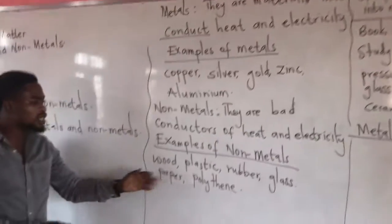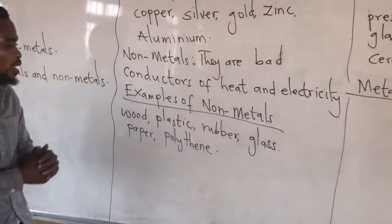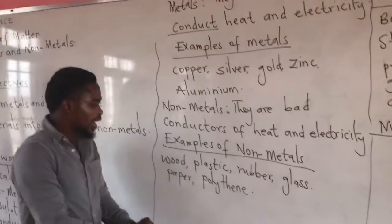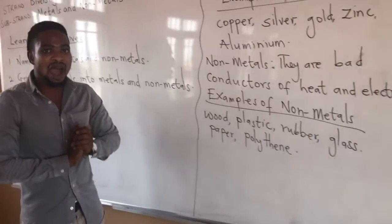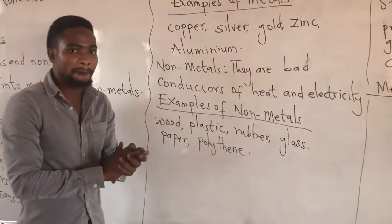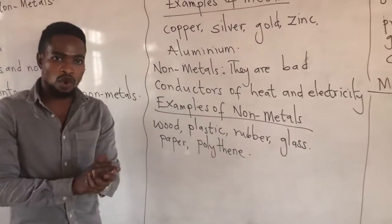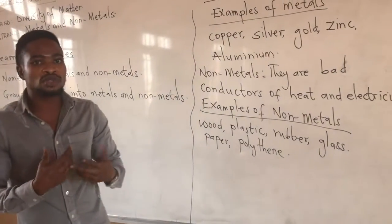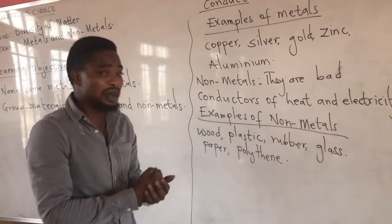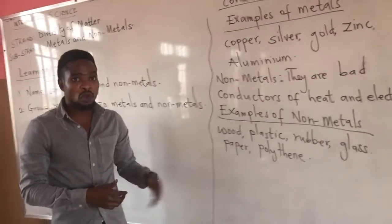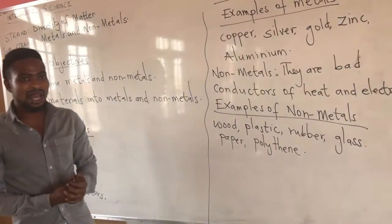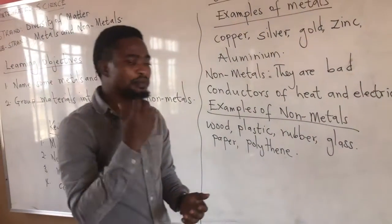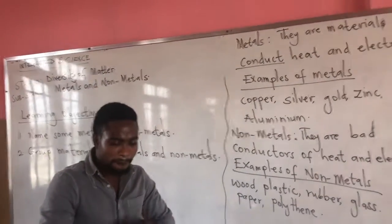So let us look at examples of non-metals. Wood is a non-metal. We also have plastic — such as a plastic cup and bowl — they are non-metals. We have rubber, which we use at home, also a non-metal. We have glass, which we use for drinking water or soft drinks. We have paper, which we use to write on. And finally, we have polythene, which is also a non-metal.